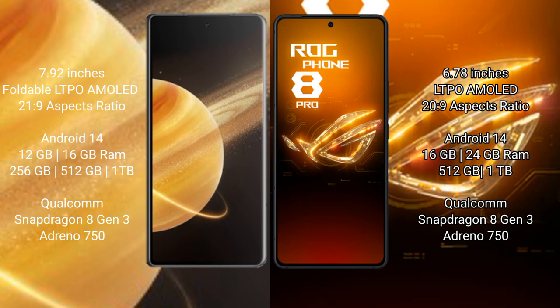Honor Magic V3 runs on Android 14 operating system. Asus ROG Phone 8 Pro also runs on Android 14. Honor Magic V3 comes with 16GB RAM and 256GB, 512GB, or 1TB internal storage, powered by the Snapdragon 8 Gen 3 processor and GPU.